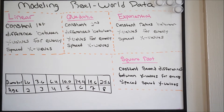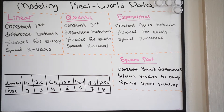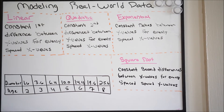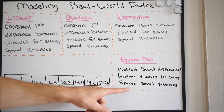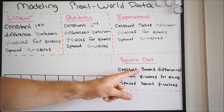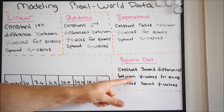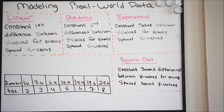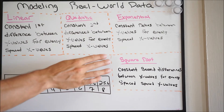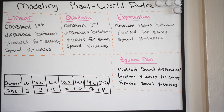Here is our next example. We have diameter and age — diameter is my x, age is my y. Looking at the possible functions, my eyes go towards square root. It says a constant second difference between x values for evenly spaced y values. Notice I have evenly spaced y values here, so I'm going to try square root and see if it works out. We have to do a first difference and then a second difference. All we're going to do is take the difference between our x values.